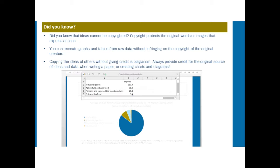Did you know that ideas cannot be copyrighted? Copyright protects original works or images that express an idea, but the idea itself cannot be copyrighted. You can actually recreate graphs and tables from raw data without infringing on the copyright of the original. Copying the ideas of others without giving credit, however, is plagiarism. Always provide credit for the original source, idea, and data when writing a paper or creating charts and diagrams. The library has web pages that will teach you different ways to cite resources to avoid plagiarism.